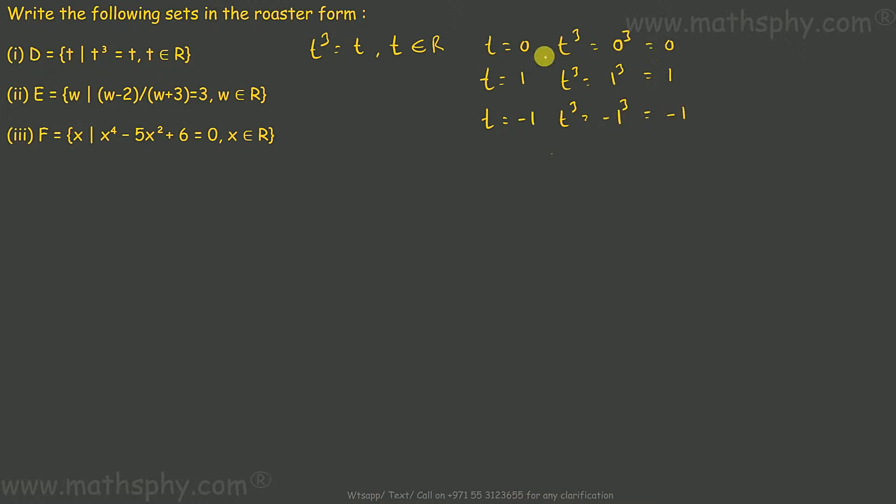Now in these three situations where T was 0, T³ was 0; T was 1, T³ was 1; T was negative 1, T³ was also negative 1. If I try to take T as 2, T³ would be 2³ which means 8. T and T³ are not equal, but I have to keep T³ equals T. In that case I have only three elements and they would be 0, 1, and negative 1.